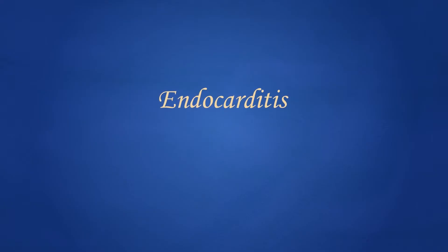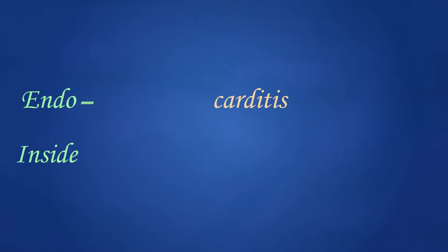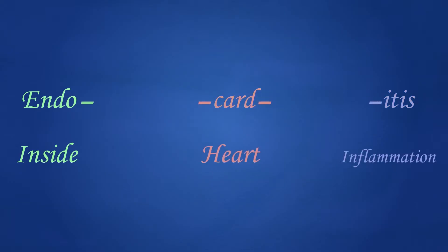First, let's split it into its parts using what we learned in the previous lesson. Endo is a prefix meaning inside. Card is a root meaning heart. Itis is a suffix meaning inflammation. So easy!